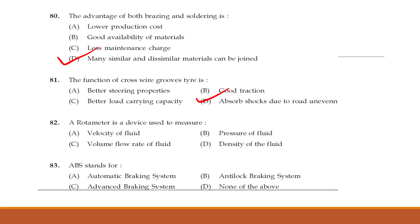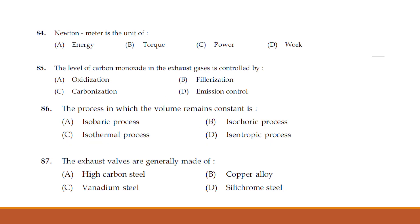A rotameter is a device used to measure: the velocity of fluid, the pressure of fluid, the volume flow rate of fluid, or the density of fluid. The answer is option C — rotameter measures the volume flow rate of fluid.